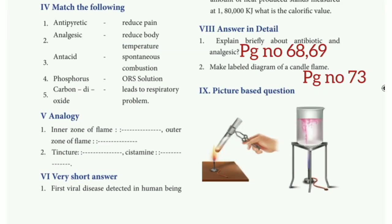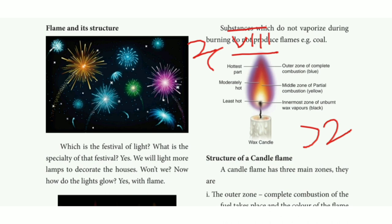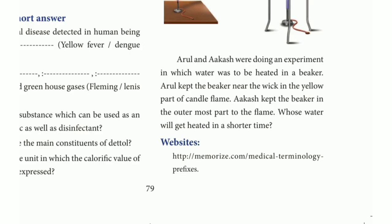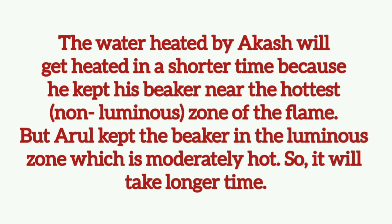Second question: make a labelled diagram of a candle flame. Refer to page number 73 where there is a candle picture for full marks. Picture-based question: Arul and Agas were doing an experiment in which water was to be heated in a beaker. Arul kept the beaker near the wick in the yellow luminous part of the candle flame. Agas kept the beaker in the outermost part of the flame. Whose water will get heated in a shorter time? The answer is Agas's water will get heated in a shorter time because he kept his beaker near the hottest non-luminous zone of the flame, but Arul kept the beaker in the luminous zone which is less hot, so it will take longer.